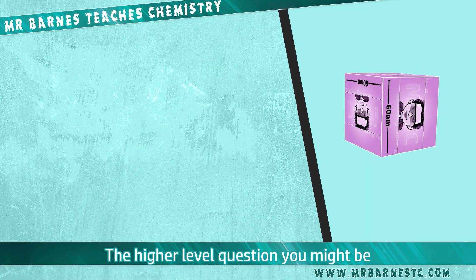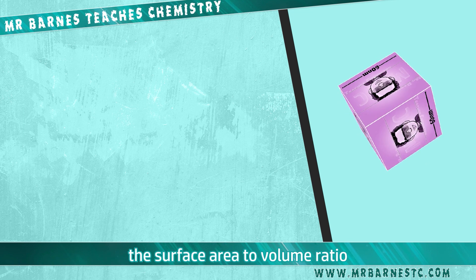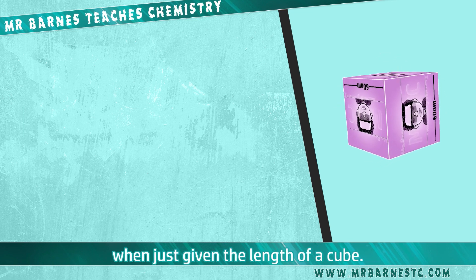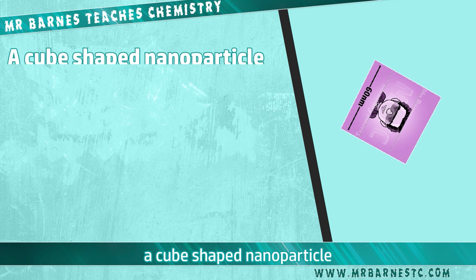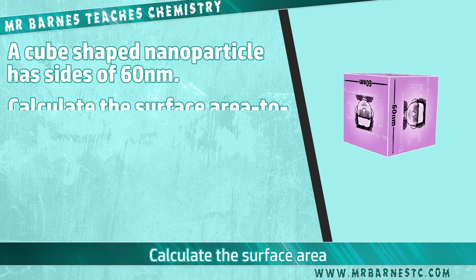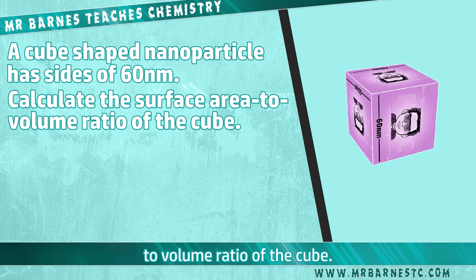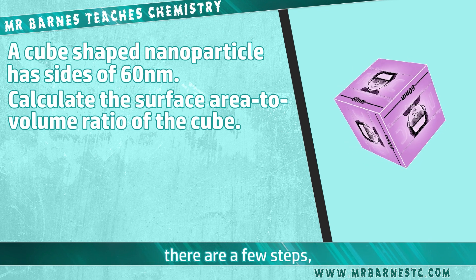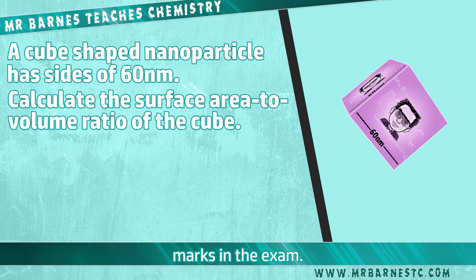The higher level question you might be asked is to work out the surface area to volume ratio when just given the length of a cube. For example: a cube shaped nanoparticle has sides of 60 nanometres — calculate the surface area to volume ratio of the cube. To do this there are a few steps, each of which will get you marks in the exam.